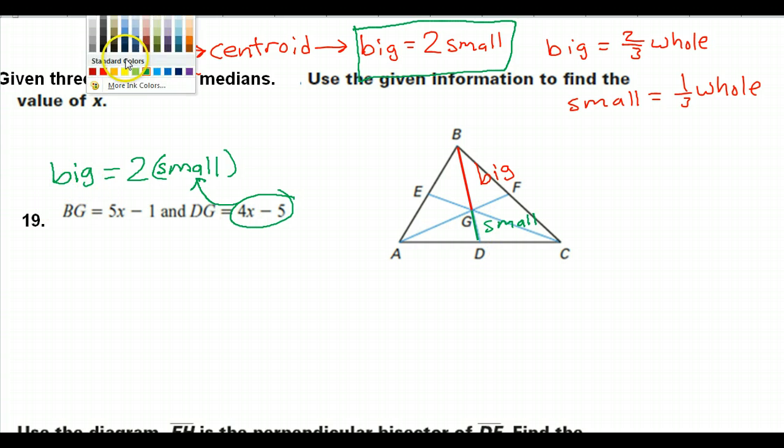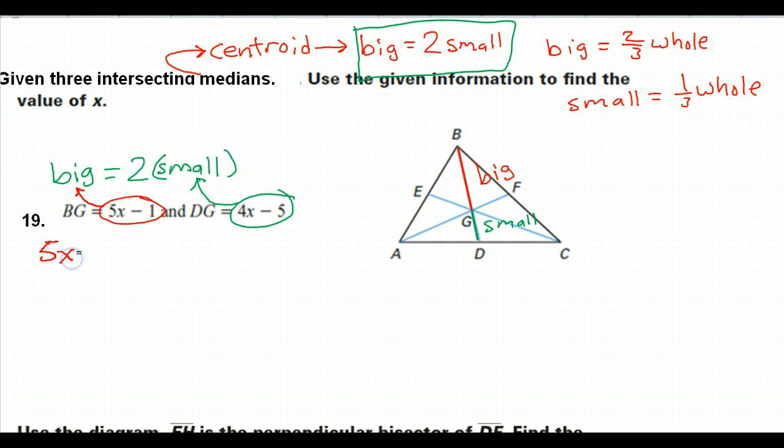So that means 5x minus 1 is going to equal 2 times the small piece, which is 4x minus 5. The big piece equals double the small piece. So that was the hard part, understanding that that was the equation that we have to set up.